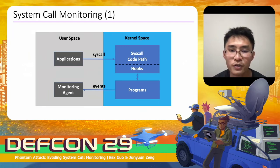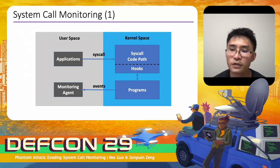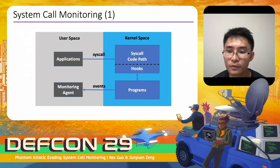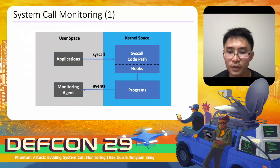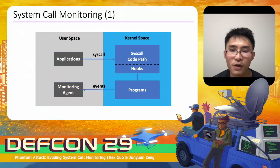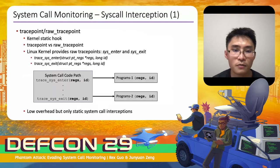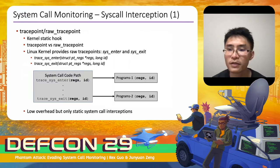When an application system call is invoked, the system call code path is executed. If there are hooks in the code path, the attached program will be called to collect system call data — for example, system call arguments. The data is sent to a user-based monitoring agent, which checks if the application's system calls conform to user-defined rules. If not, it may generate alerts.